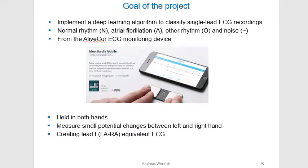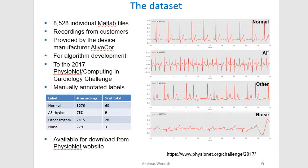The goal of the project was to implement a deep learning-based algorithm that can classify single-lead ECG recordings into four classes: normal rhythm, atrial fibrillation, other rhythm, and noise. The data comes from the AliveCor ECG monitoring device, which is held in both hands. It can measure very small potential changes between the left and the right hand. The dataset consists of 8,528 individual MATLAB files — recordings from customers who purchased one of three ECG devices from AliveCor. The company provided the data for algorithm development to the 2017 PhysioNet Computing in Cardiology Challenge, and they come with manually annotated labels. All data are available on the PhysioNet website for download.